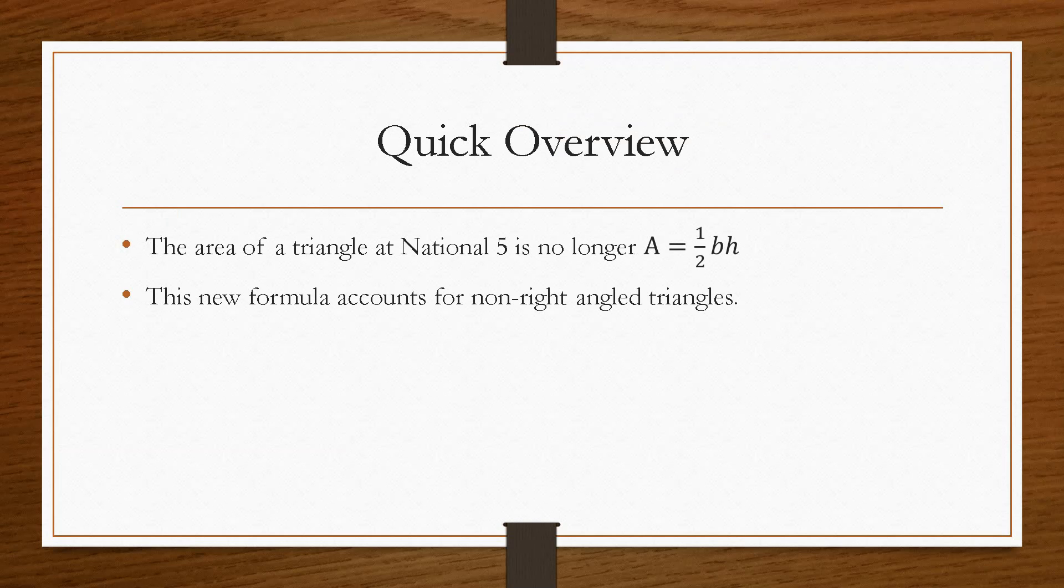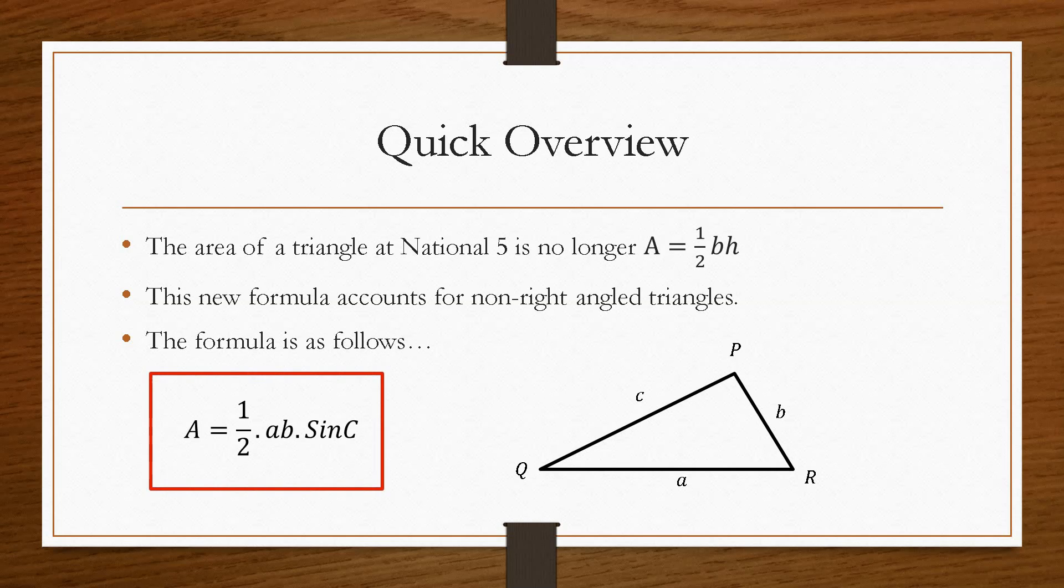This new formula accounts for non-right angled triangles. The formula is as follows. If we have a triangle with vertices P, Q and R, and we label each length small a, b and c, the new formula becomes A equals a half times small a times small b multiplied by sine capital C.